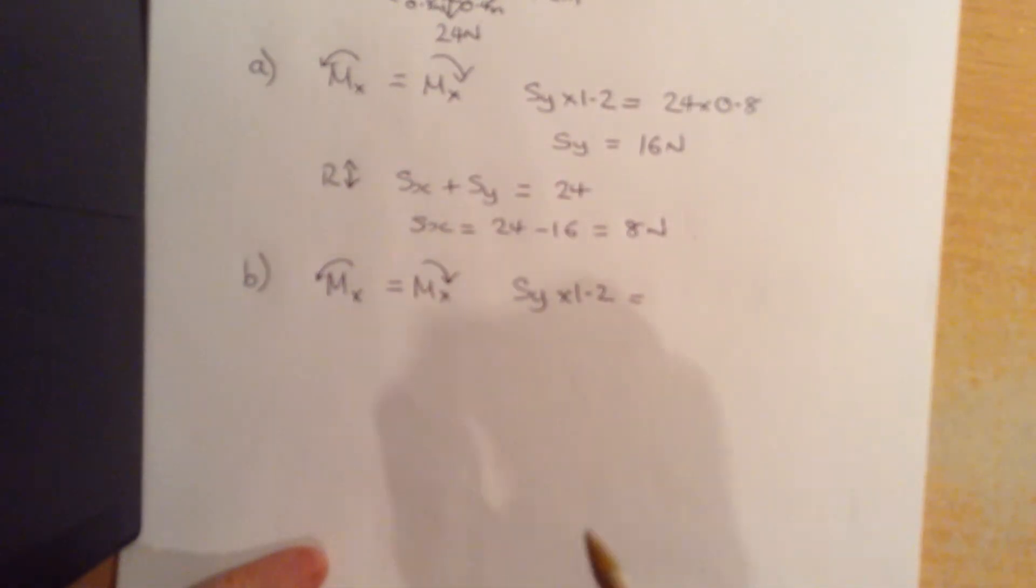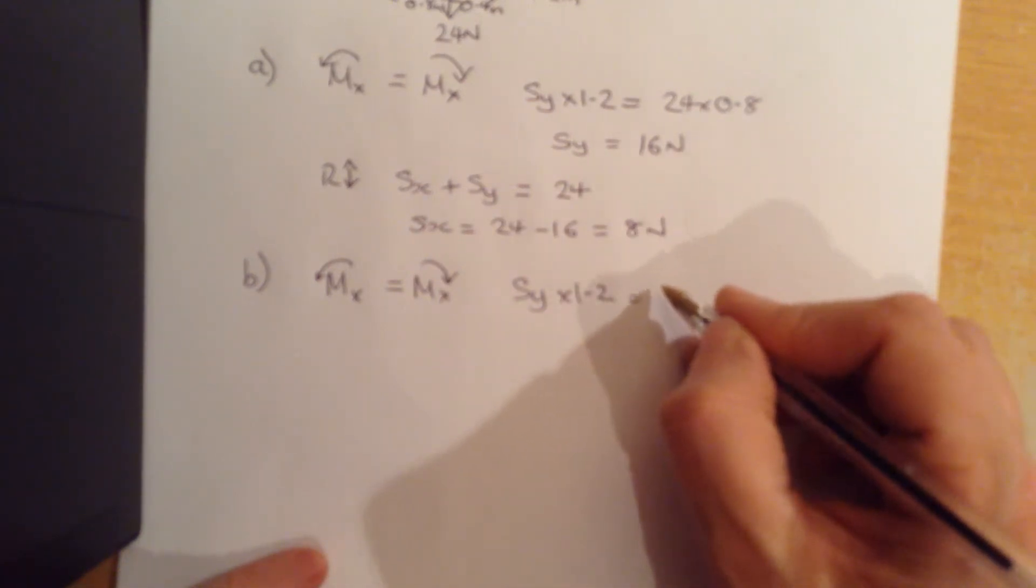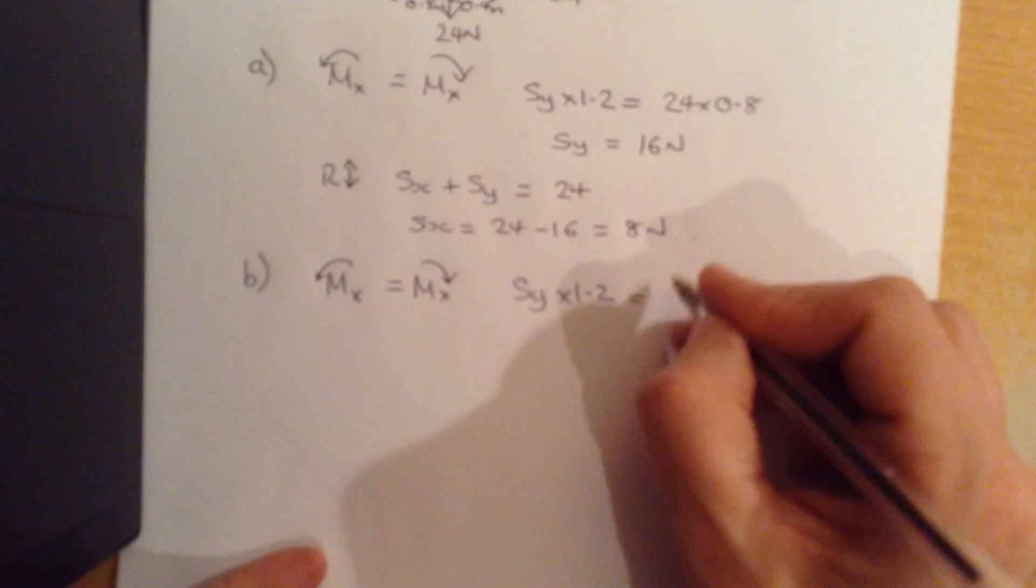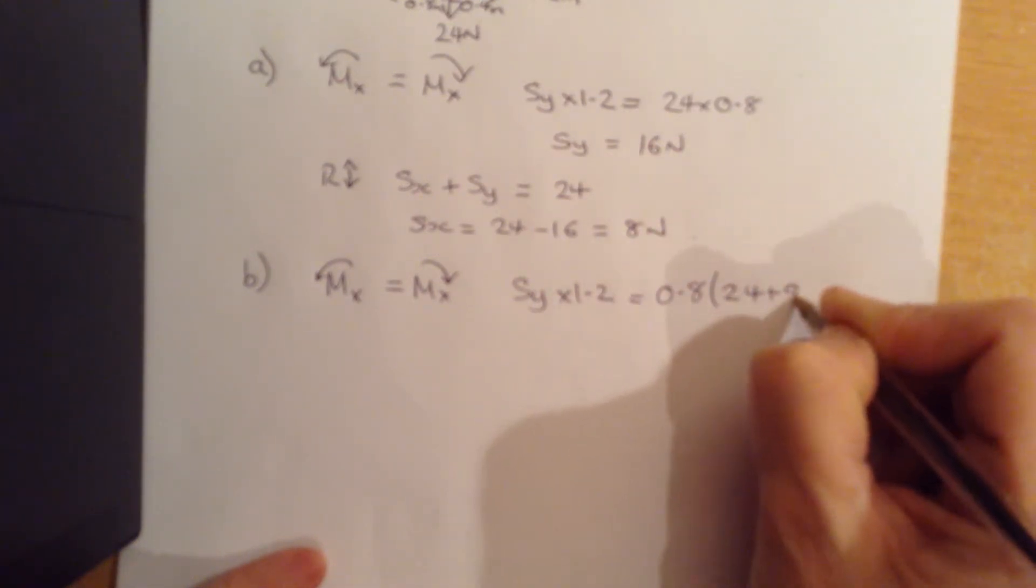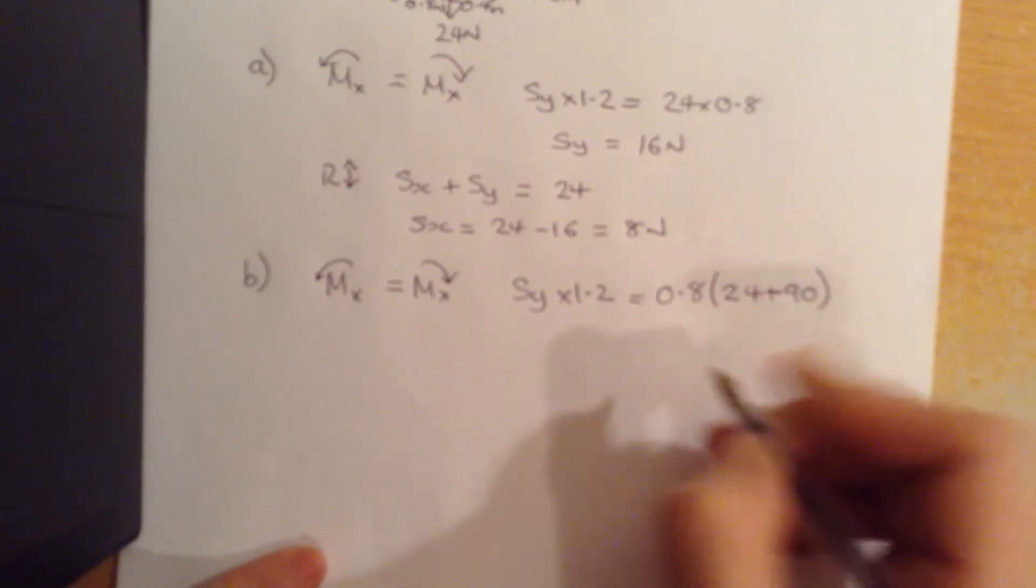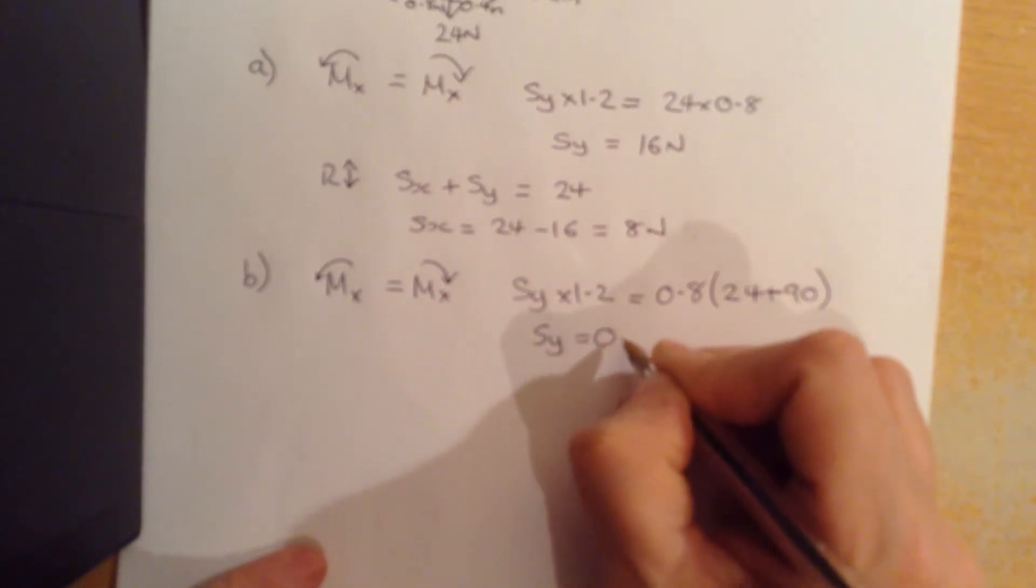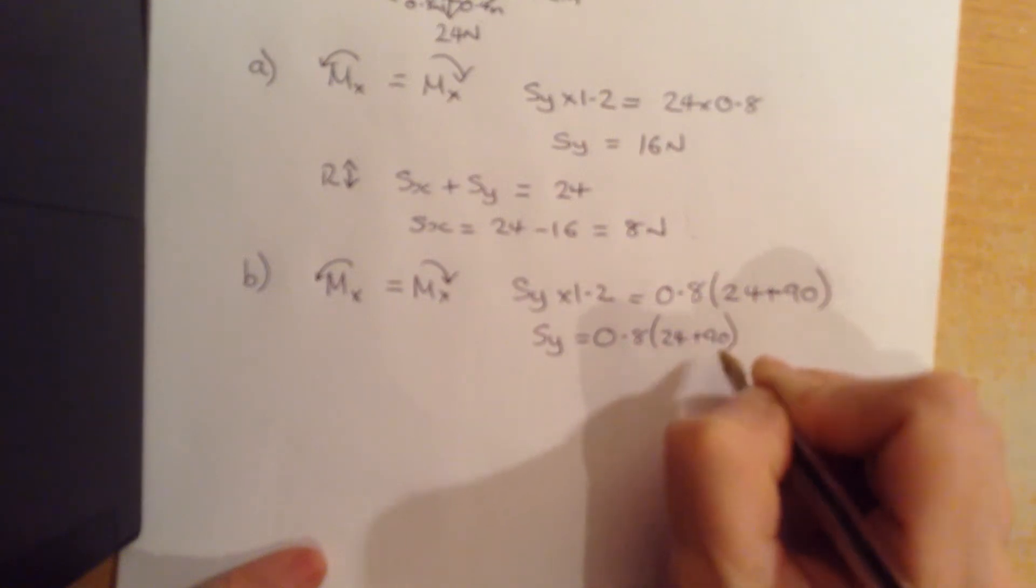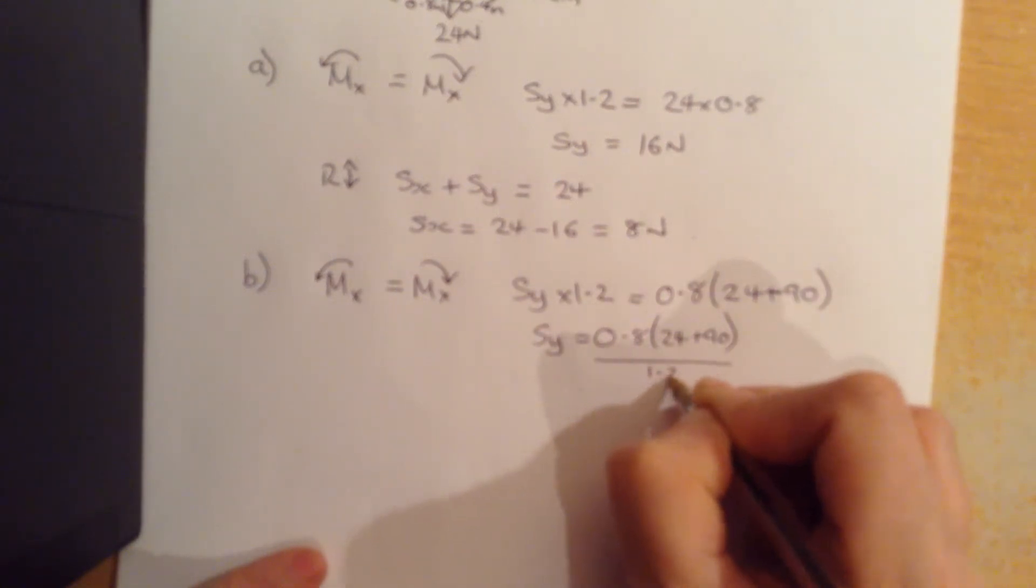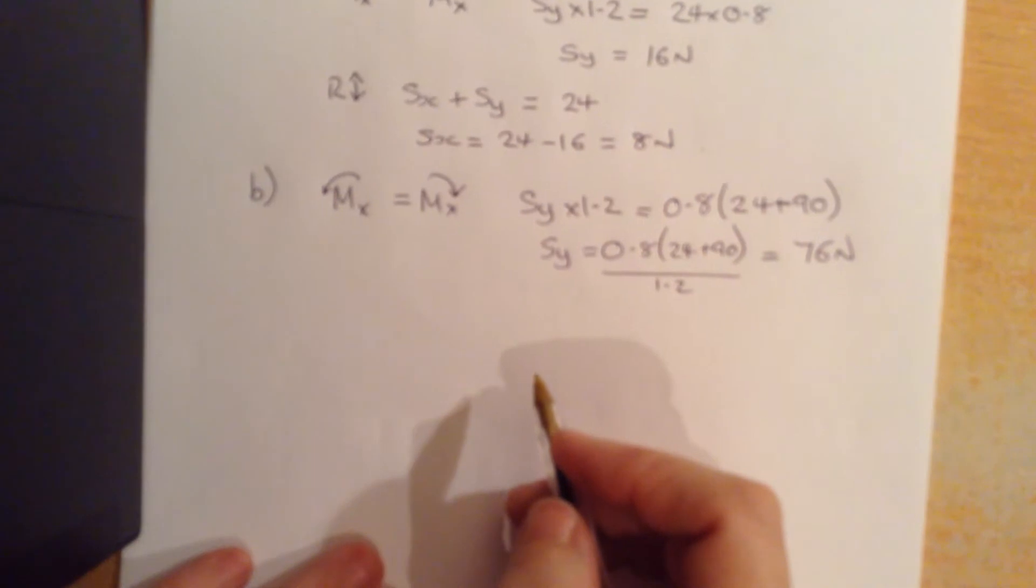yeah just checking, getting tired you can tell. So instead of 24 it's now 24 plus 90, so we would say the distance is still 0.8 but the weight now is 24 plus 90. So SY is equal to 0.8 times 24 plus 90 divided by 1.2 which is going to equal 76 newtons.